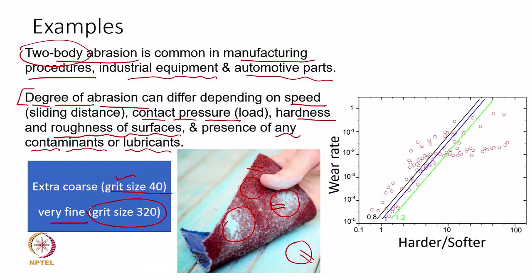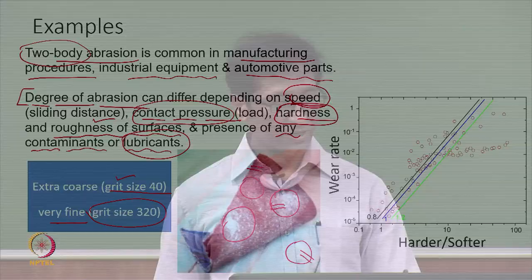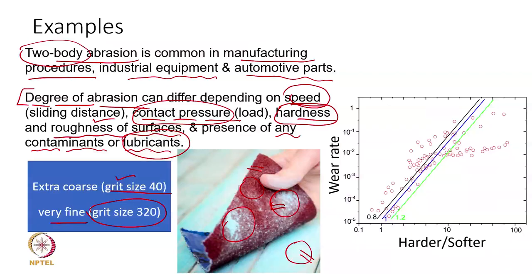This is important to consider whenever we want to reduce abrasion. If we do not have control on speed or pressure or are not able to increase hardness beyond a certain limit, and surface roughness also cannot be improved, then lubricant plays a major role. However, lubricant usage is somewhat costly with a number of related parameters to account for. If we cannot control speed, applied load, hardness, and roughness, lubricants or some sort of contamination control will be helpful. Otherwise, try to increase hardness, increase contact area, and reduce surface roughness to reduce abrasive wear.